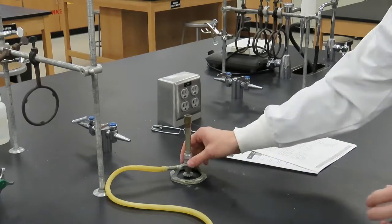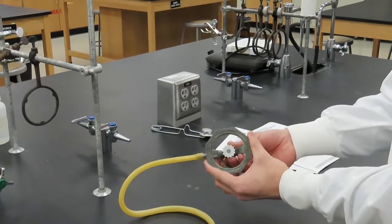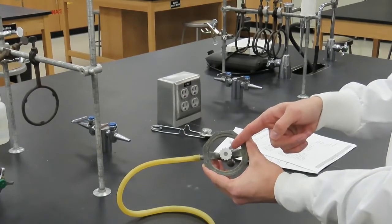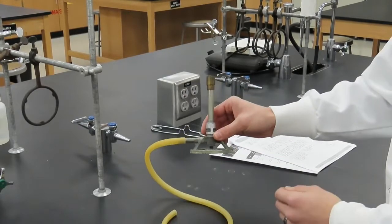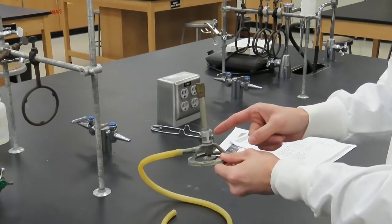The gas valve is located at the bottom of the burner and regulates the amount of natural gas fed to the burner. The collar is located at the bottom end of the burner's barrel and is used to adjust the amount of air that will mix with the gas.